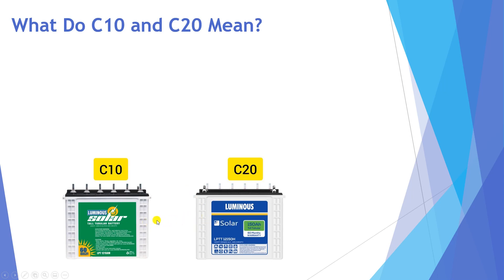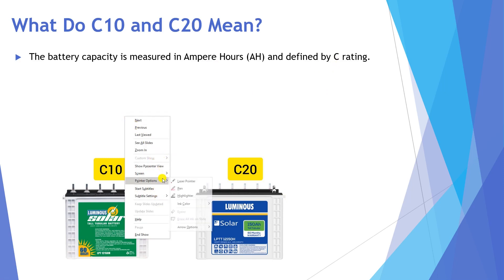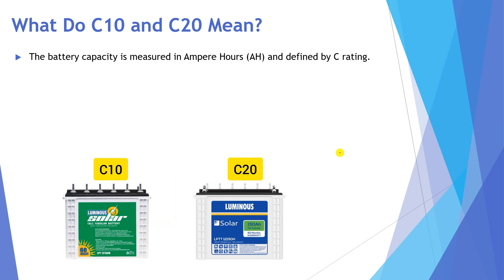These batteries have the same rating of 150Ah — the only difference is C10 and C20. Battery capacity is measured in ampere-hours (Ah), and is also defined by something called the C rating. Ampere-hour is the unit of measurement of the energy that can be supplied by the battery in a certain time. It consists of two elements: ampere (current)